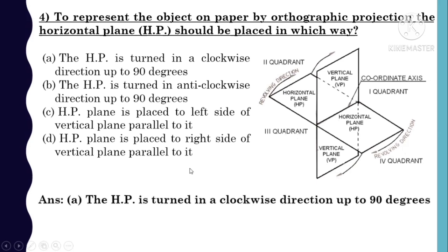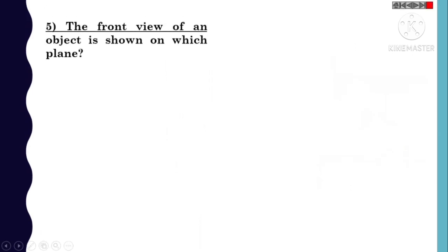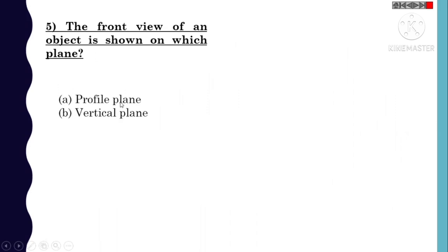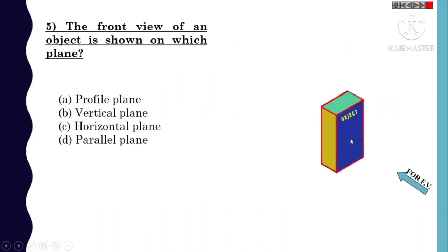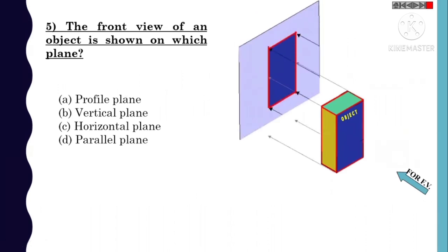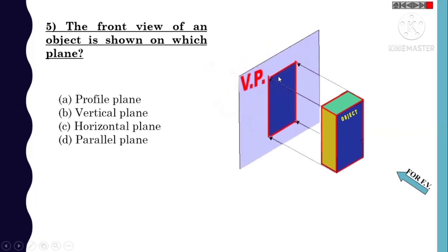MCQ number 5: The front view of an object is shown in which plane? Options are: A) profile plane, B) vertical plane, C) horizontal plane, D) parallel plane. When drawing the front view, the rays are projected onto the vertical plane. So option B, vertical plane, is correct.